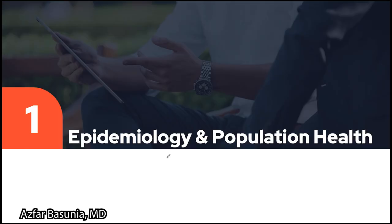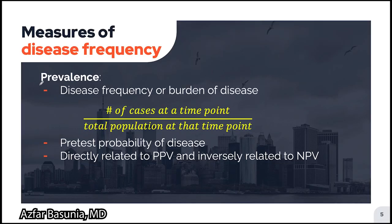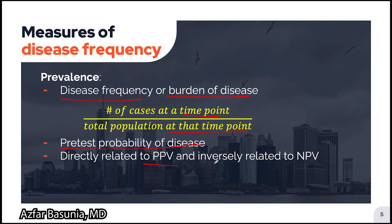Our first module is going to be on epidemiology and population health. Let's start by talking about prevalence. Prevalence is defined as the disease frequency or burden of disease at a specific time point. We calculate prevalence by dividing the total number of cases at the time point by the total population at that time point. Prevalence broadly calculates the pre-test probability of a disease and it is directly related to the positive predictive value and inversely related to the negative predictive value. We will learn how to calculate the positive and negative predictive values in a future video.